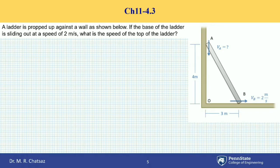So let's designate position of point B as X and position of end A as Y. Let's let length of the ladder as L, which can be found for the position shown as 3 squared plus 4 squared, which is 5 meters.